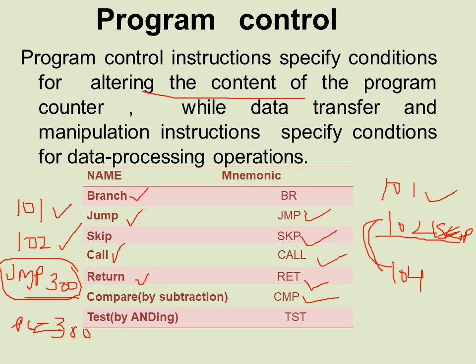When the CPU has to run the instructions, it will fetch and execute them. Each time an instruction is fetched from memory, the program counter is incremented so that it contains the address of the next instruction in sequence.